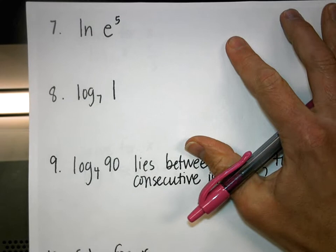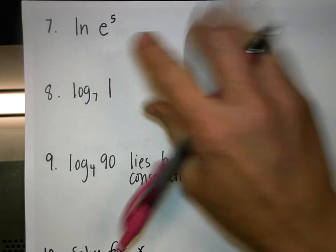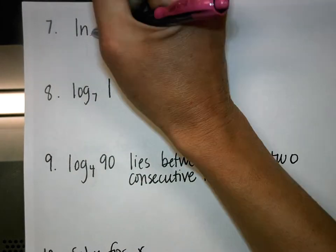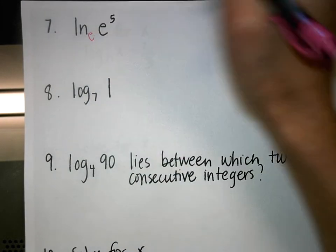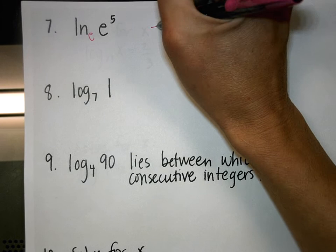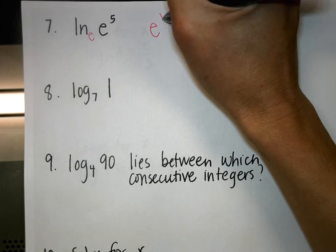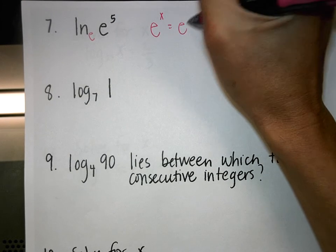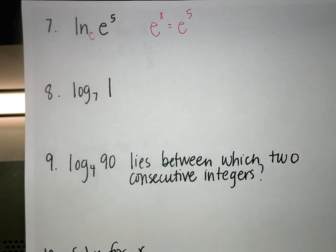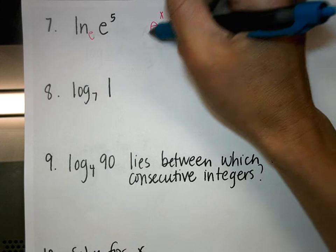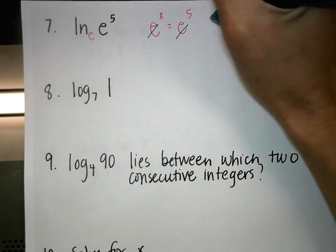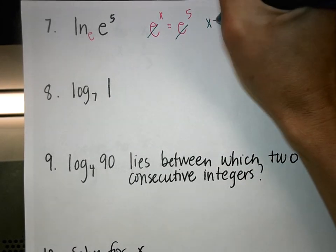Number 7: Natural log of E to the fifth power. Natural log is base E — this is stating E to what power equals E to the fifth. When we rewrite it this way, these have like bases, we can drop the bases and the answer is 5.